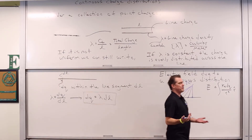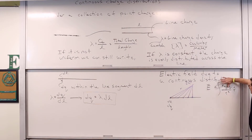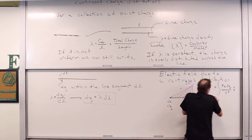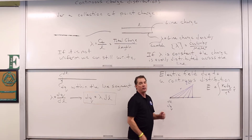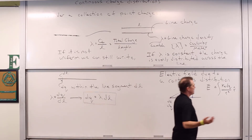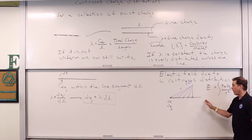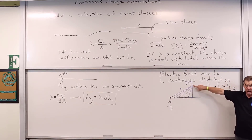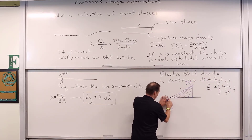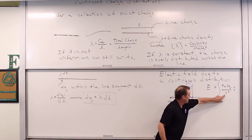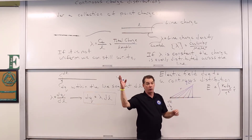K sub E dQ over R squared — this is the same as for a singular point charge, with infinitesimal charges integrated over. The tricky thing is these are vectors. We integrate over the distribution relative to the spot in which we're trying to define the electric field. Notice that each spot along this line has a different radial distance away from the point in question, so R likely varies as you integrate across the line relative to the point.